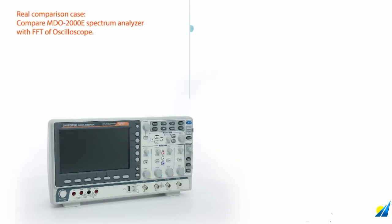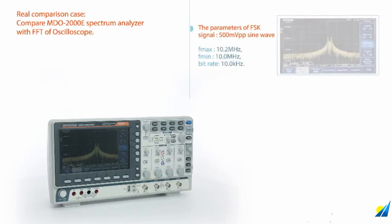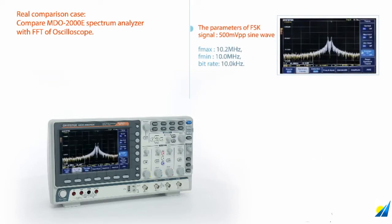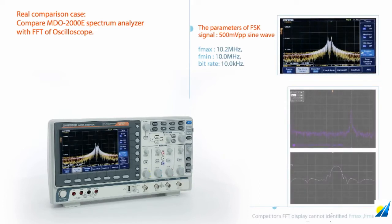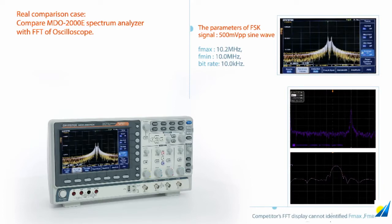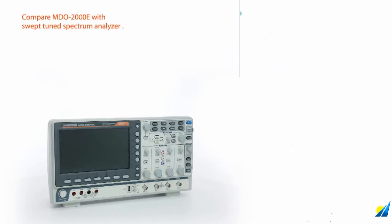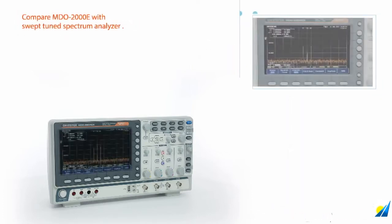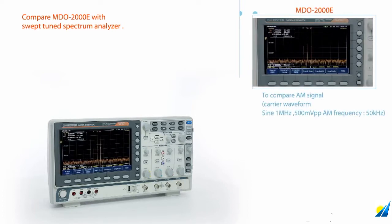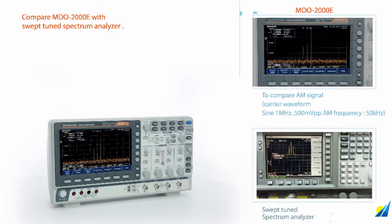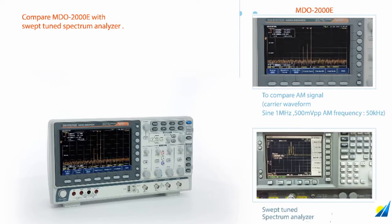By FSK test, users can clearly identify the maximum frequency and minimum frequency from the spectrum analyzer. Otherwise, the normal FFT resolution of a competitor product is insufficient to identify maximum and minimum frequency. By the same test condition, we can observe easily that the update rate is faster in the MDO-2000E than the swept-tuned spectrum analyzer.